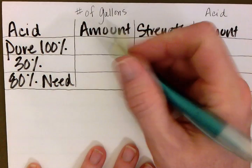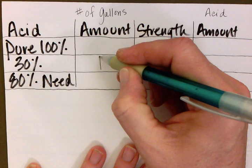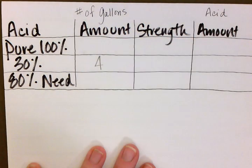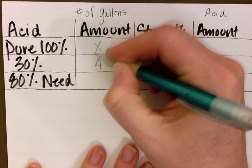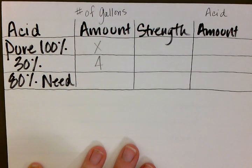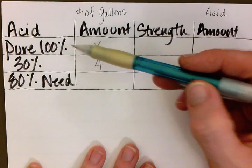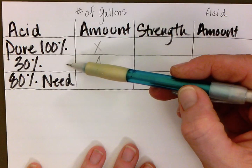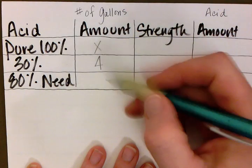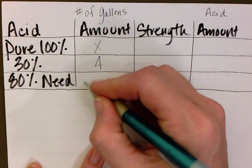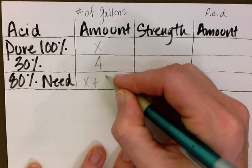We know that we have 4 gallons of the 30% solution, and the question is how much of the pure acid solution do we need. We're going to assign x there because that is the unknown. Now we know that if we add the 100% solution and the 30% solution together, we will get the needed 80% solution. That total volume is going to be x plus 4.